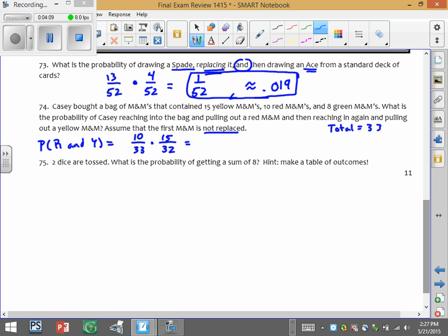So just pay attention closely to the wording here. So we have 10 out of 33 times 15 out of 32 to figure out what fractions you need to worry about. So that's about 0.142. And if we wanted that as a fraction, you could also write it as 25 over 176. Either one of those is fine. You could write it as either one.